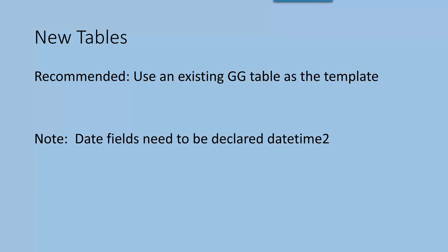A better approach is to use an existing table rather than starting from scratch. There are about 150 good tables already in the database. If you're a database person who knows SQL Server, it should be fairly easy — you can duplicate the table, strip it apart, keep what you want, add fields you need. That way you've already got those audit fields and you can rename the ID field to the appropriate name. Also, date fields must be declared datetime2.